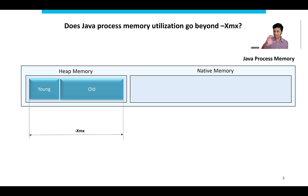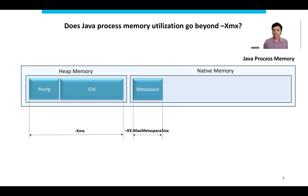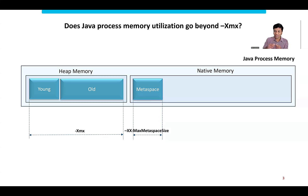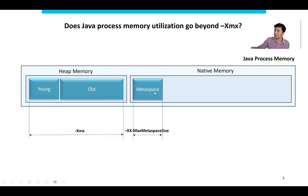After heap memory, there are other regions. There is a segment called native memory, and within it a region called metaspace. We write Java code containing classes — customer object, account object. Those class definitions go into this metaspace, which is outside of the young generation and old generation. So the answer is yes: your XMX will be exceeded because the metaspace is outside of it.